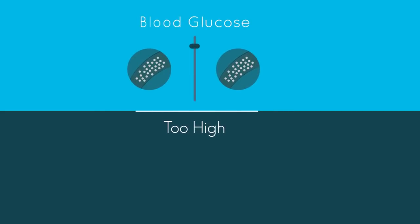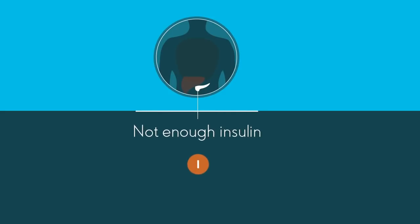Diabetes is a condition where levels of blood glucose are too high, because the body cannot use it properly. This could be because the pancreas doesn't produce enough or any insulin, or the insulin is not working properly.